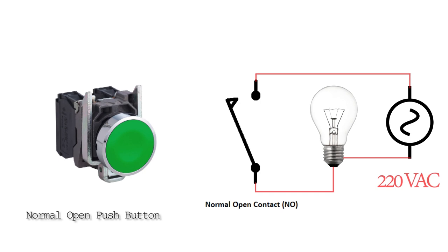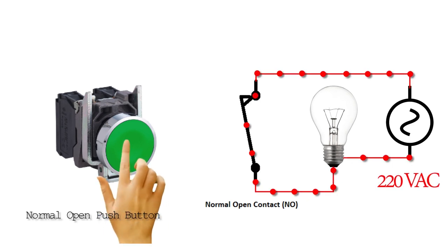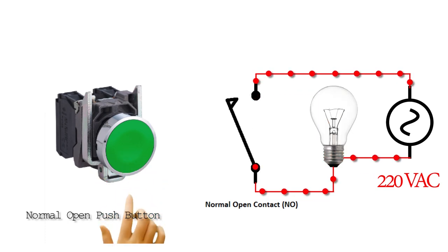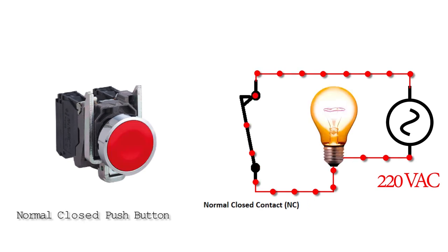Now let's understand the normally open push button more with an example by putting it in series with a bulb and a power source. If we press the push button, it will close the NO contacts, the current path completes, current starts to flow through the circuit, and the bulb turns on. If we release the push button, it will open the NO contacts again, the current path breaks, current stops flowing, and the bulb turns off.